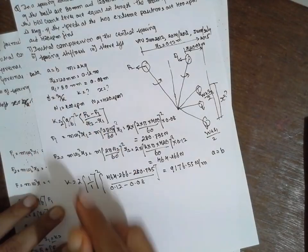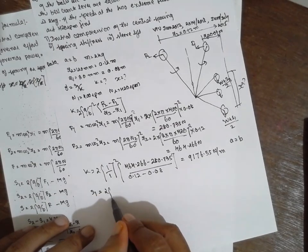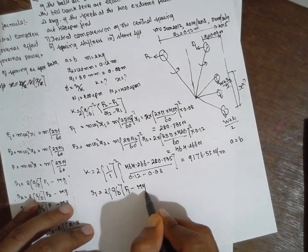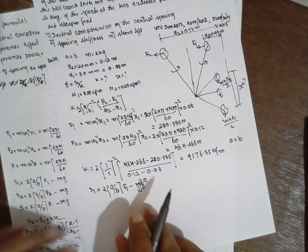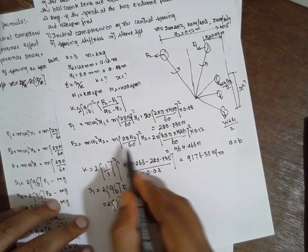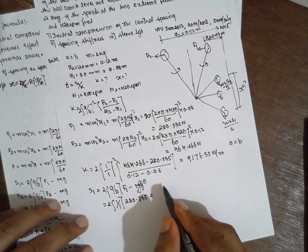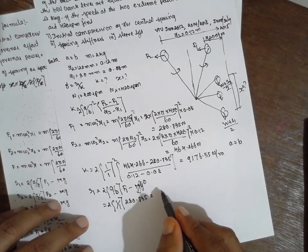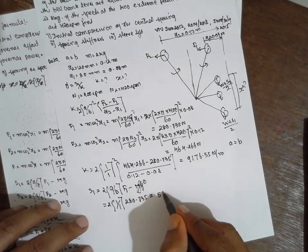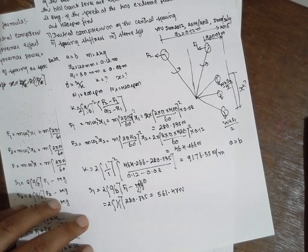We got K. Now we have to find out S1. What is formula for S1? S1 will be 2 A by B F1 minus Mg. Mass is not given, sleeve mass is neglected. Now 2, 1 divided by 1, F1 will be 280.735. Answer for S1 will be 561.47 N.